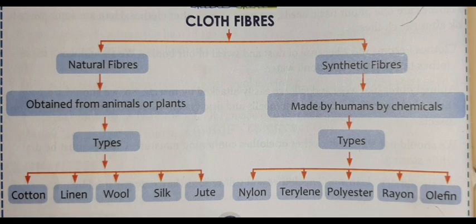For example, you must have seen at home that your nani, dadi, or mama when they make sweaters — what do they make them from? From wool. First there is a simple thread, and then by knitting they convert that thread into a beautiful sweater. So all types of clothes are formed from cloth fibers.